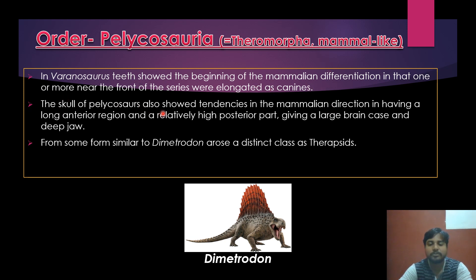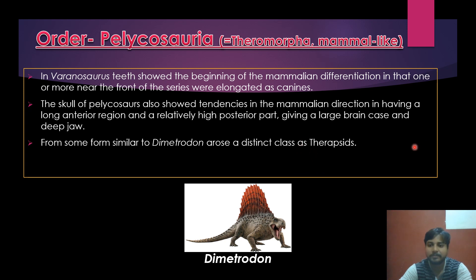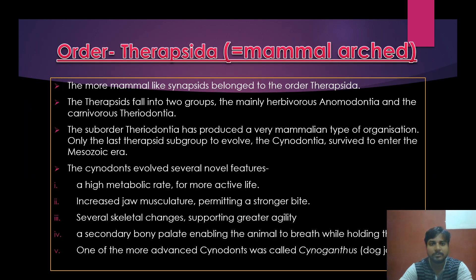The skull of pelicosaurs also showed tendencies in the mammalian direction, having a long anterior region and a relatively high posterior region, giving a large brain case and a deep jaw. From some form similar to Dimetrodon, a distinct class arose — the therapsids. Synapsids, and more especially the therapsids, are the key group leading toward mammals.